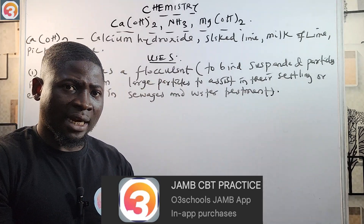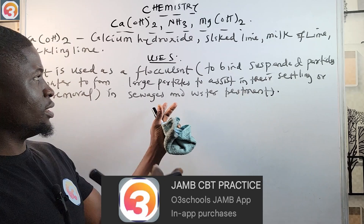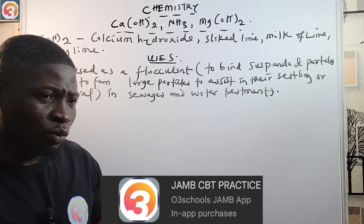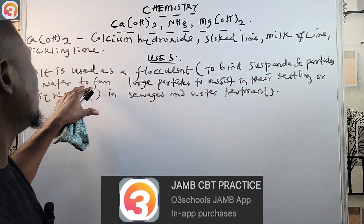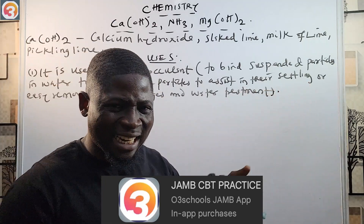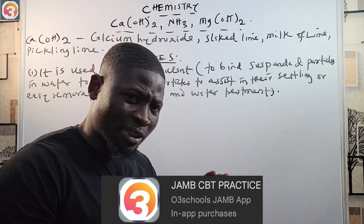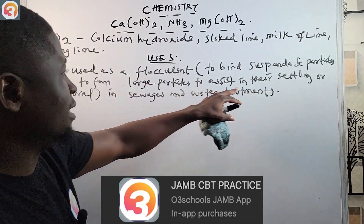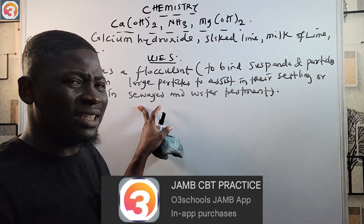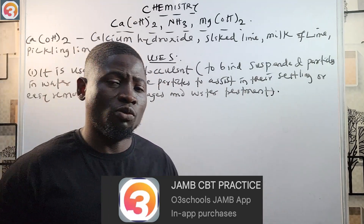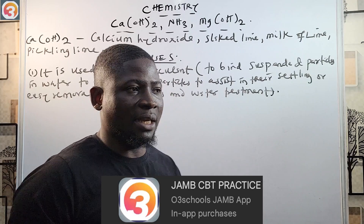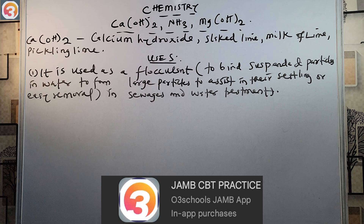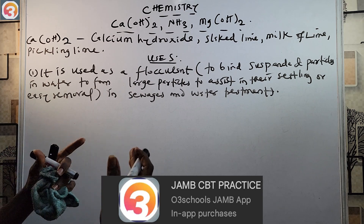So when calcium hydroxide is added to water that has many dirty suspended particles, it binds those particles together so they settle down easily and can be removed. That is one of the uses of calcium hydroxide — used as a flocculant to bind suspended particles together to assist in settling and easy removal.